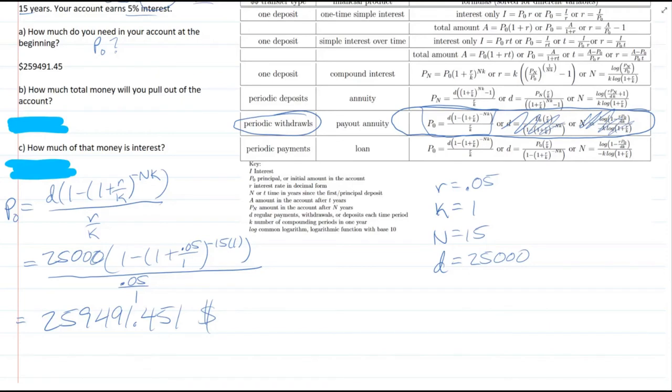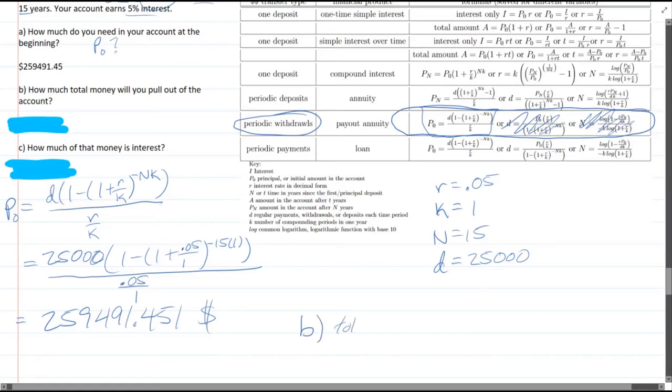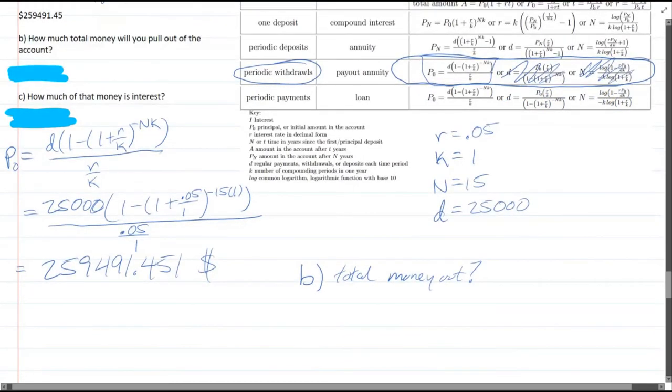Alright, part B, how much money will you pull out total? Alright, so that was the $25,000 per year for 15 years.